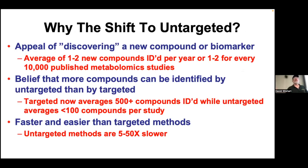Why have we been shifting to untargeted? People think that if they do untargeted, they're going to discover a new compound or new biomarker. From almost 20 years of experience in this field, an average of only one to two compounds are identified each year—one to two compounds for every 10,000 published metabolomics studies. So over your lifetime as a researcher, you will never report the discovery of a new metabolite. The odds are against you.